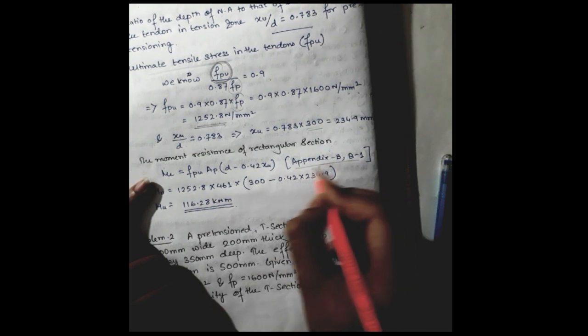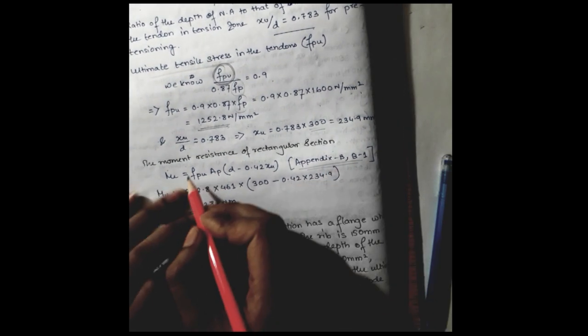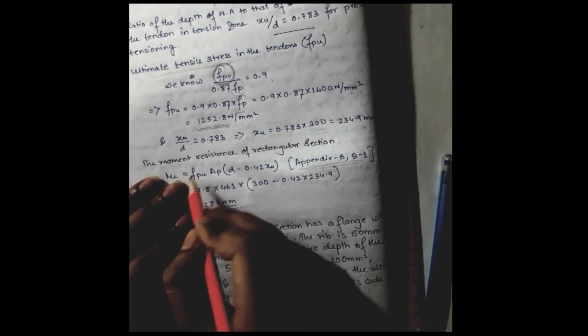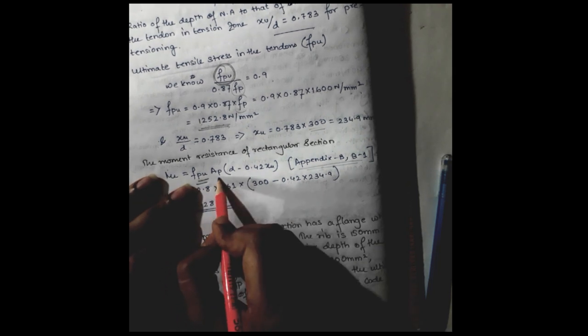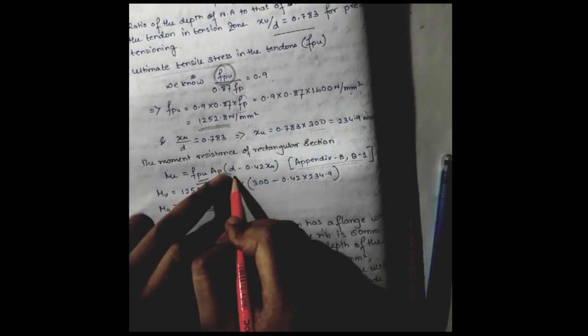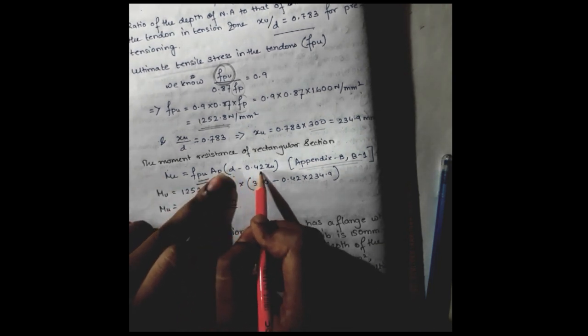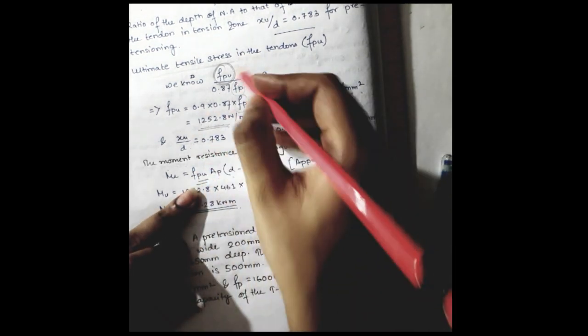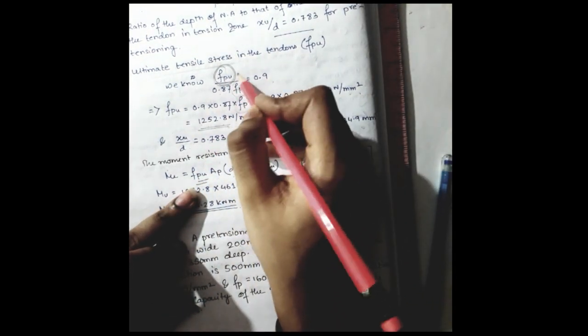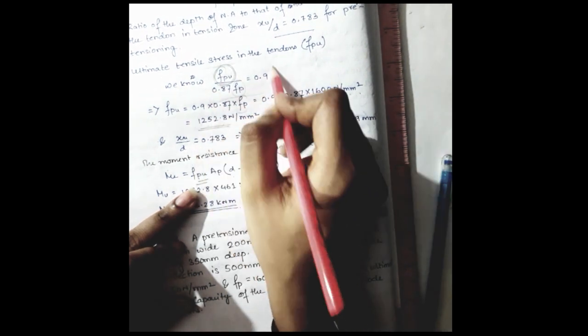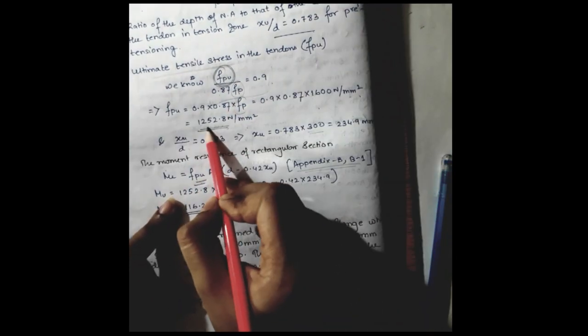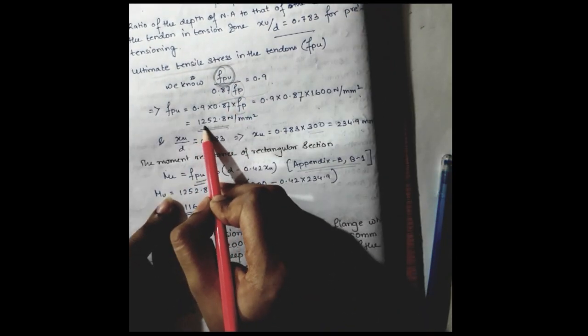So the moment of resistance of the rectangular section, which is given in Appendix B, B1 to be Mu equal to FPU into Ap into d minus 0.42 xu. So we just calculated this FPU from this equation.